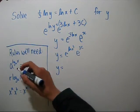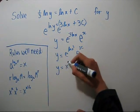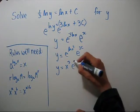And now we can use this rule. So we'll have x cubed times e to the 3C.